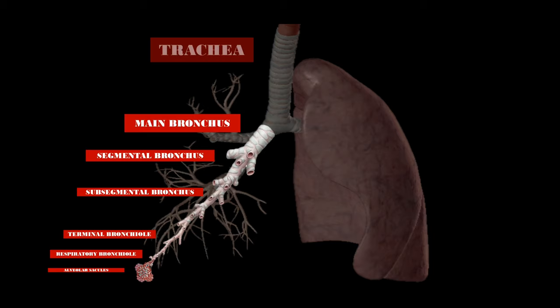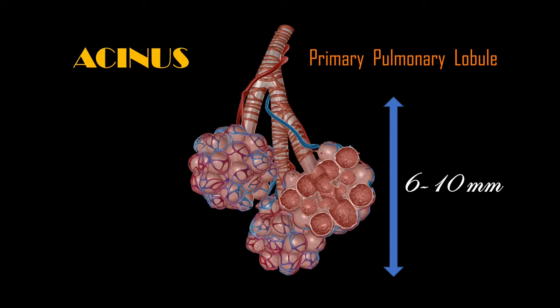At the end of this road, we find this structure called the acinus. The acinus is also called the primary pulmonary lobule and they are usually described as ranging from 6 to 10 mm in diameter. Let's detail the anatomy of the acinus.